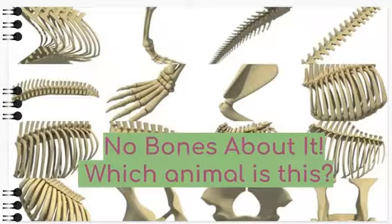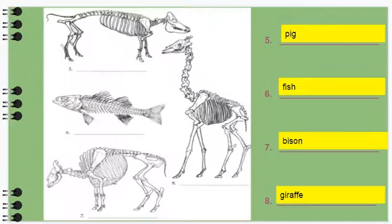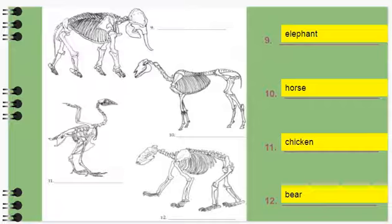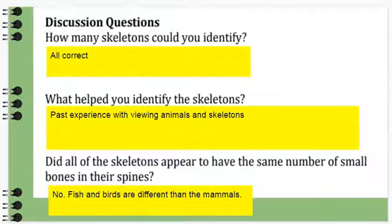Then we have the 'No Bones About It' — which animal is this — and you've got your skeletons with your answers, three pages of those. Your discussion questions, there were two slides of those.